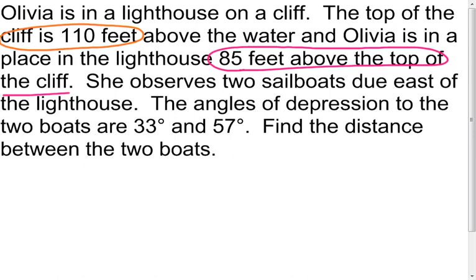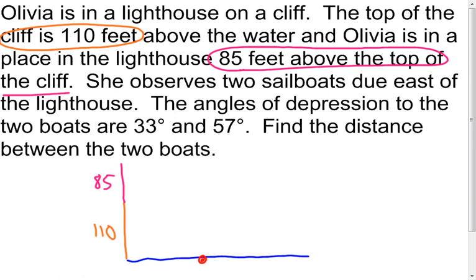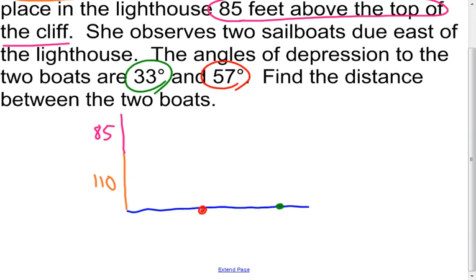Let's break this down. The water is at the base, then the cliff is 110 feet above the water, and Olivia is even higher up in the lighthouse — another 85 feet. So she's 195 feet total above the water. There's a sailboat out here and another sailboat farther out, and we need to figure out the distance between them — I'll call that x.